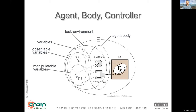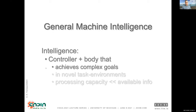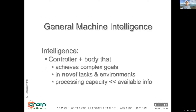So intelligence is a controller in a body that is demonstrated to achieve complex tasks — otherwise it hardly deserves the label of being intelligent. But that's not enough. It's not just complexity — it's really about novelty. And the available information vastly outstrips the processing capacity of the kind of agent or controller we're interested in.